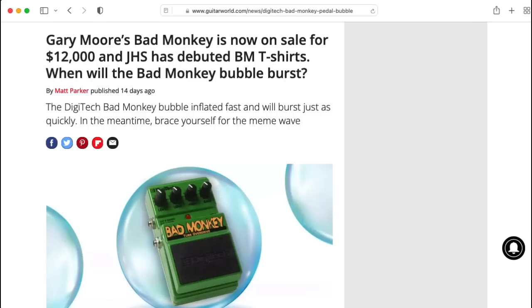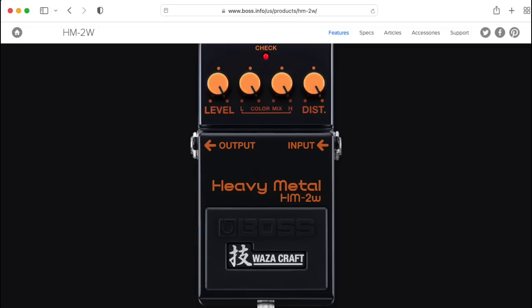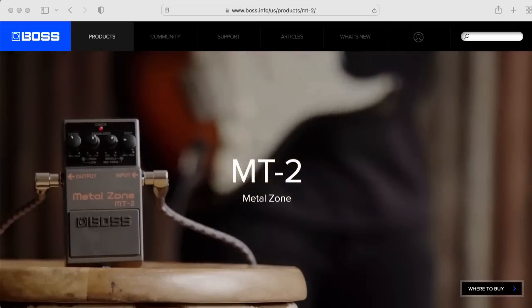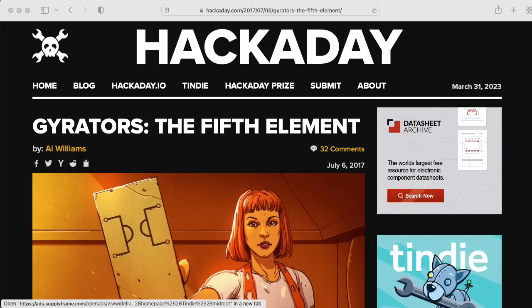What's something that the Digitech Bad Monkey, the Boss Heavy Metal, the DoD Grunge, and the Boss Metal Zone pedals have in common? They all contain gyrators.